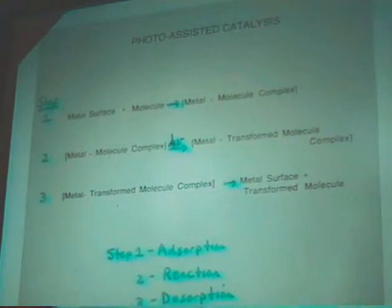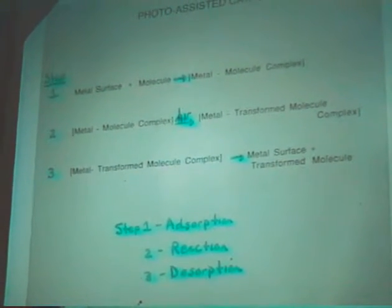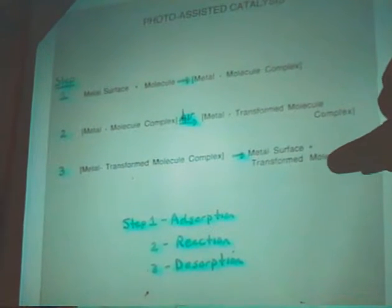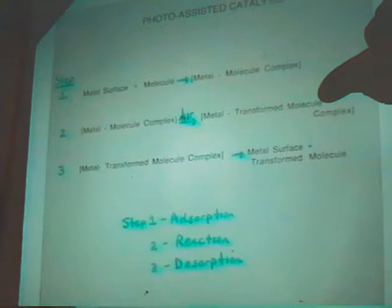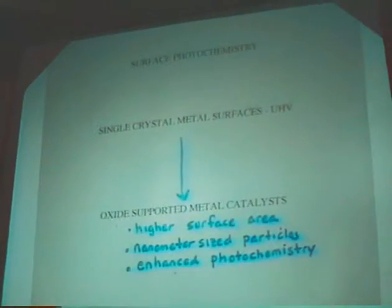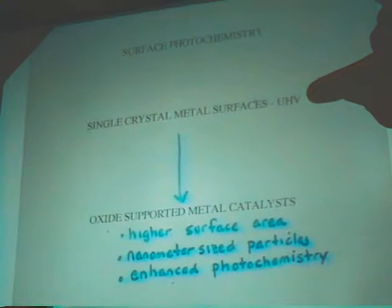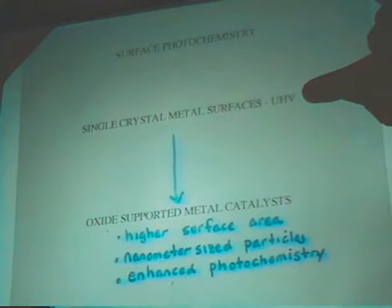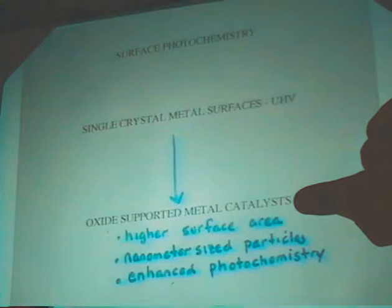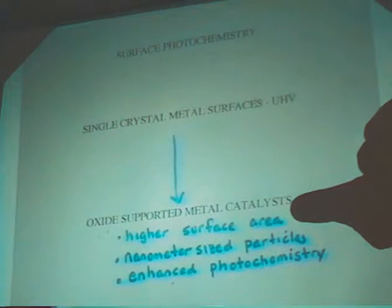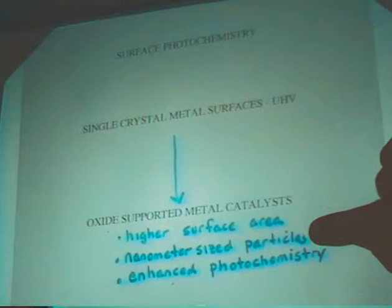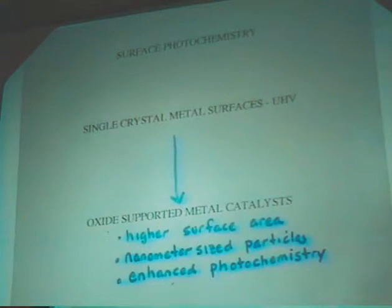So you can start thinking about what I have here as photo-assisted catalysis, where in step one, you simply have adsorption of the molecule onto the surface. Step two, you have reaction, but this is a photon-driven reaction. And then step three, we have desorption. This is exactly analogous to a heterogeneously catalyzed reaction, where in step two, we have a photo-assisted step. People have been working on single crystal metal surfaces in ultra-high vacuum, and now we've started doing some work in the area of these oxide-supported metal catalysts where you have higher surface area. These particles are nanometer-sized particles.